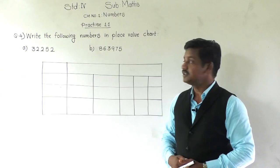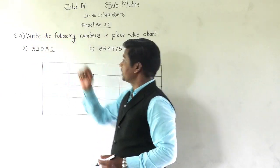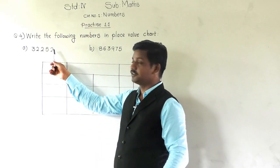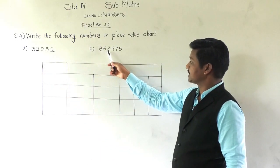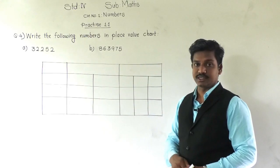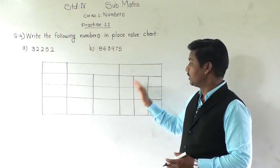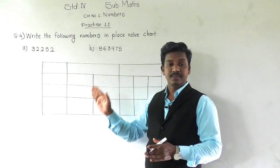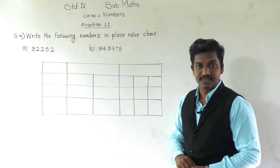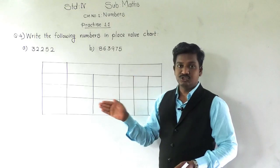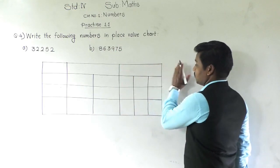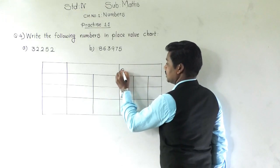Let's move to question four: write the following numbers in a place value chart. The two numbers given are 32,252 and 8,63,975. We have to draw a place value chart for these. Remember the place value chart from the earlier lecture. Since these are five-digit and six-digit numbers, the chart will have three periods.